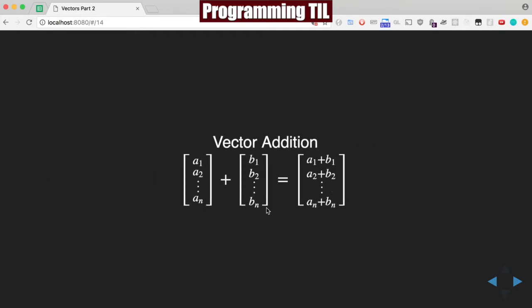Vector addition and subtraction is really nice and simple. Basically, if we have a vector of a given dimension and a vector of the same dimension, you just add each element together to get a new vector.